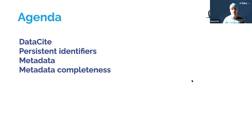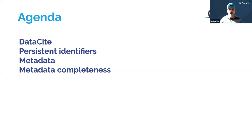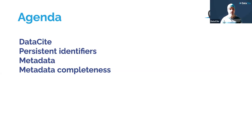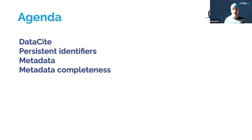This webinar will be recorded. You can see it on our YouTube channel within the next two weeks. The slides will also be shared with you afterwards, so you don't need to write things down. We will be talking about Datacite — giving a short intro — also about persistent identifiers, what they are, what you can do with them, and to which things, people, or organizations they apply. Then a short intro to metadata, which will lead to the second talk by Bosun.